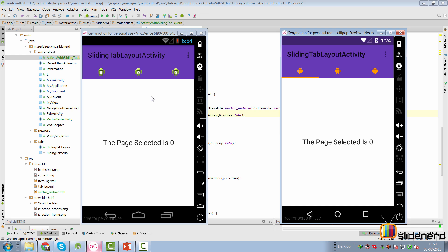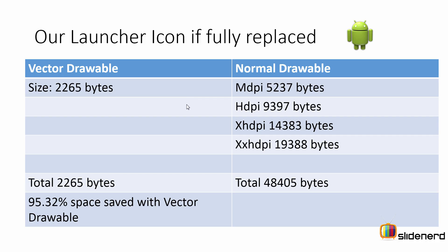Let's take a look at the stats — using a vector drawable versus not. With normal drawables, there were four folders with four different icons at various sizes. The vector drawable had a single icon at 2,265 bytes. Total space consumed using the vector drawable versus the normal approach — which was 48,405 bytes — means we saved 95.3% of space with the vector drawable.